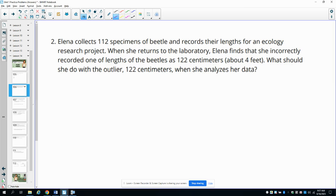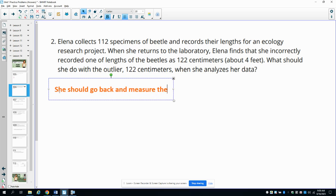Number two: Elena collects 112 specimens of beetle and records their length for an ecology research project. She returns to the laboratory and finds that she incorrectly recorded one of the lengths to be 122 centimeters. What should she do with the outlier? Obviously incorrect—the beetle is not that long. She should probably try to figure out which beetle she mismeasured, so she should go back and measure the beetles again to see if she can figure out her mistake.